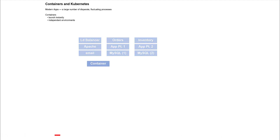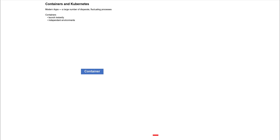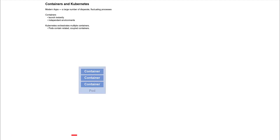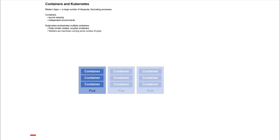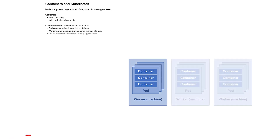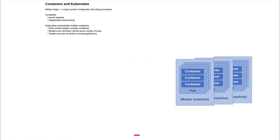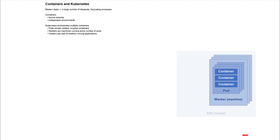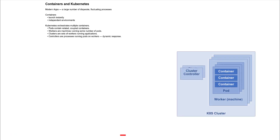Containers let us launch every service quickly and in exactly the right environment. Kubernetes orchestrates multiple containers. Related or coupled containers are grouped into pods. A number of pods can be run on suitable worker machines or nodes until they run out of capacity. The set of machines running the pods of an application are called a cluster. Kubernetes also runs controller processes to monitor the pods, handle failures, balance loads, etc.